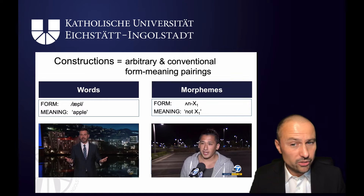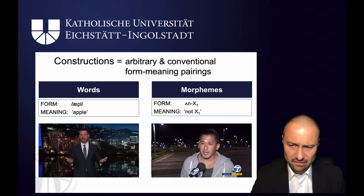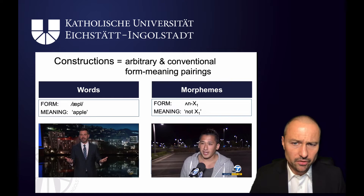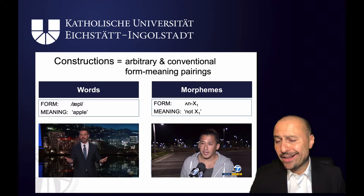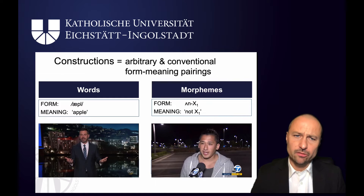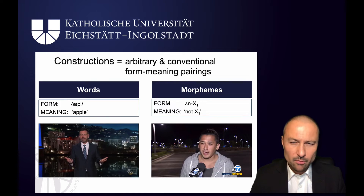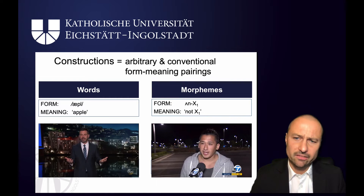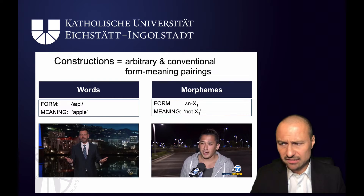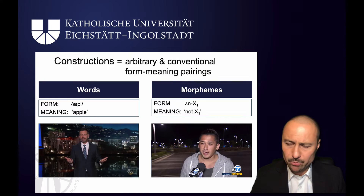Morphemes — the little part at the start of 'un-something', like unfriendly, unhappy, untrue — are clearly meaningful. So it's a form that has a meaning. And again, that is a construction, because by the definition it's an arbitrary and conventional pairing of form and meaning. Constructions don't stop at words — we have constructions for elements that seem to be smaller, and as you can see in the representation, they can have slots, filled by many items: untrue, unfriendly, unhappy, un-goochie.